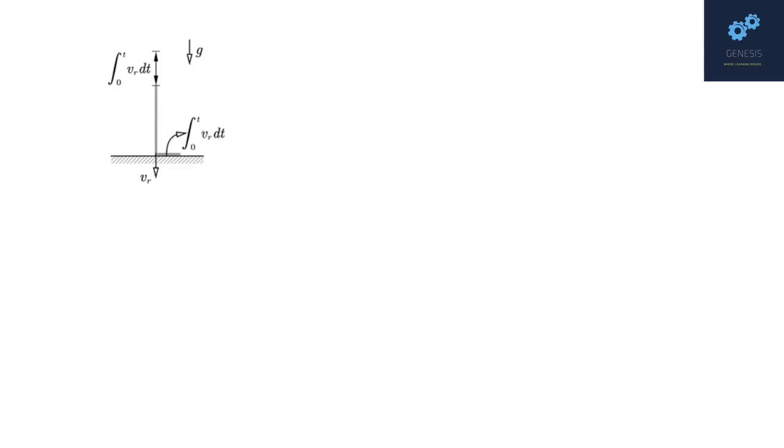In this figure, the situation at some time t after the chain hits the table has been shown. In this, vr is root under 2gh plus gt, where root under 2gh is the speed with which the lower end hits the table, and after time t, the speed of the chain will be root under 2gh plus gt.